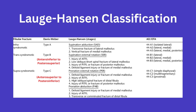Next is the supination external rotation category. This can include a lateral short oblique fracture of the fibula, which one can associate with the Weber B fracture pattern. This is specifically with an anterior inferior to posterior superior fracture line. Thus, another quick association between Weber B and the supination external rotation injury.